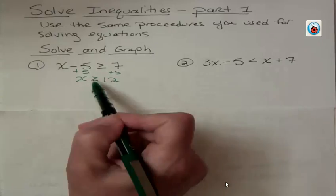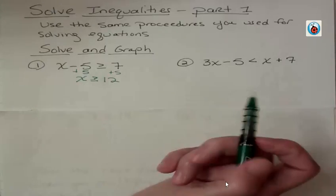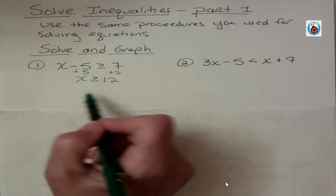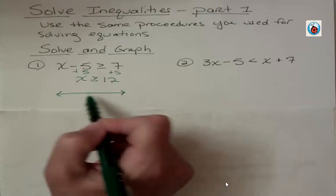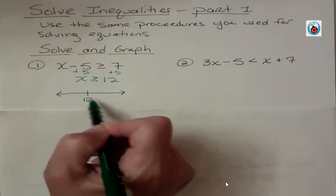We're done. We solved it. We just had a different symbol in between the sides before we would have had an equation. And then the graph, well, we know that the number that we're talking about is 12. That is our starting point.